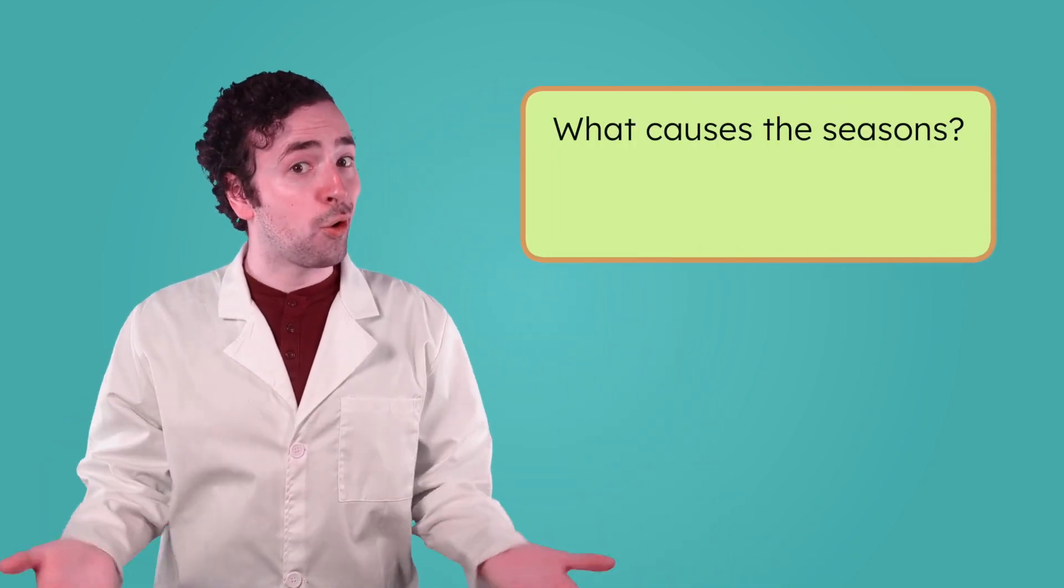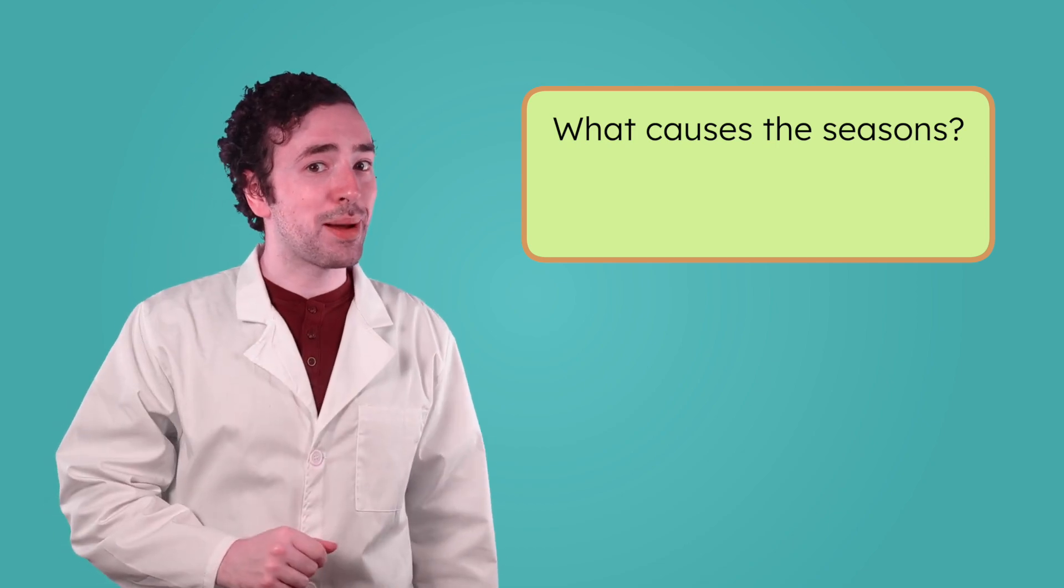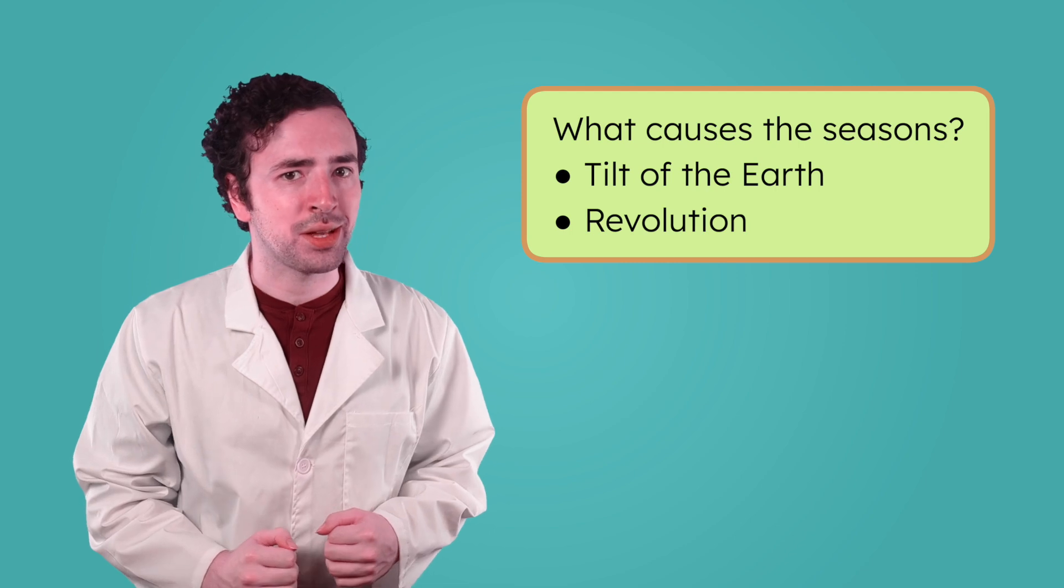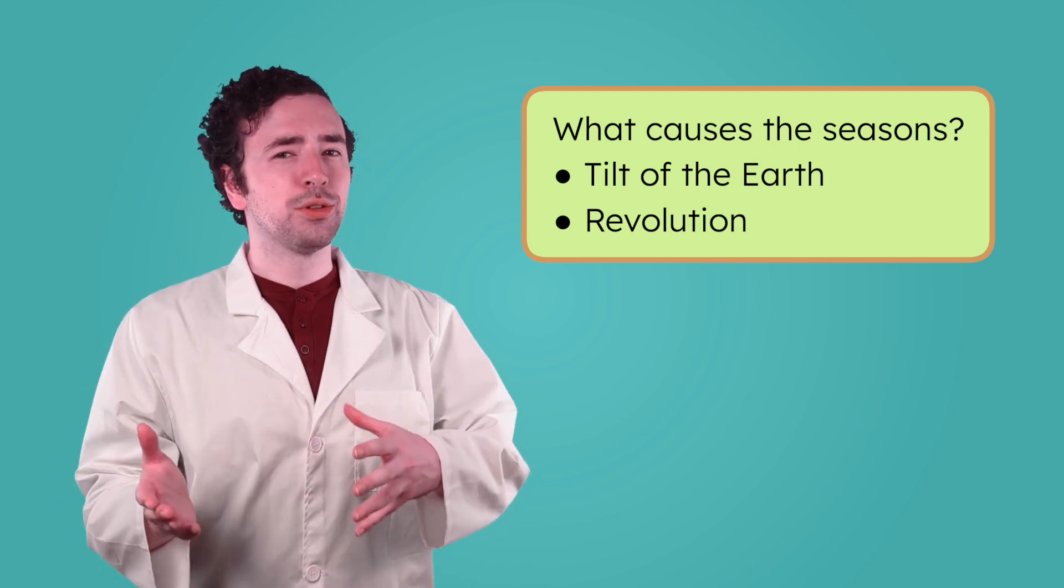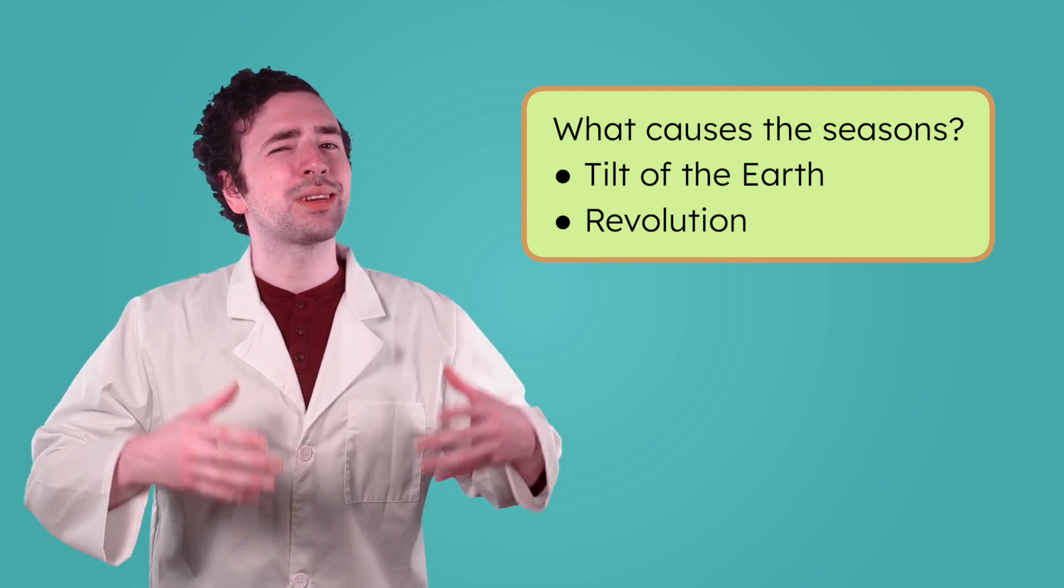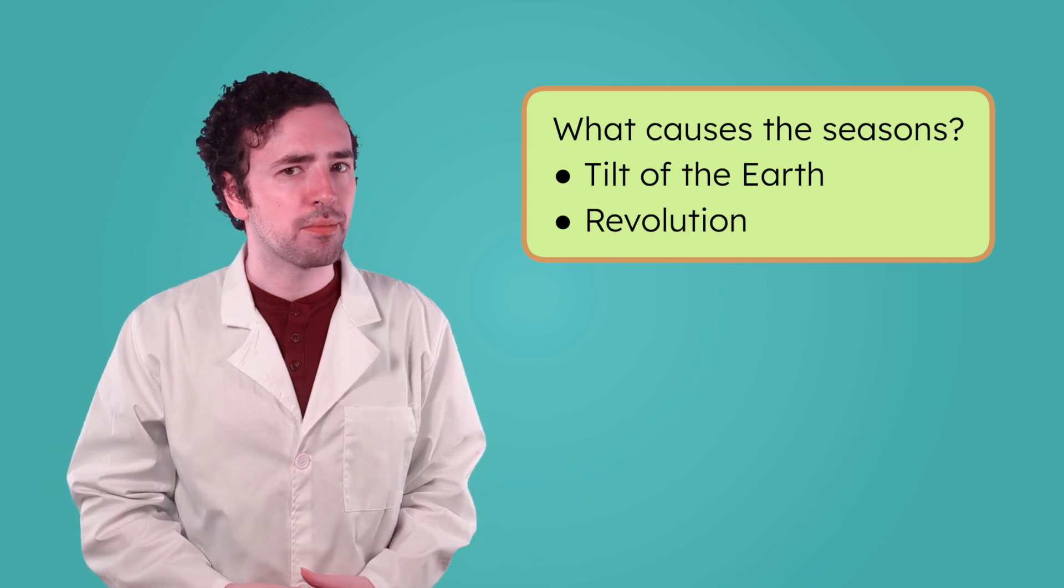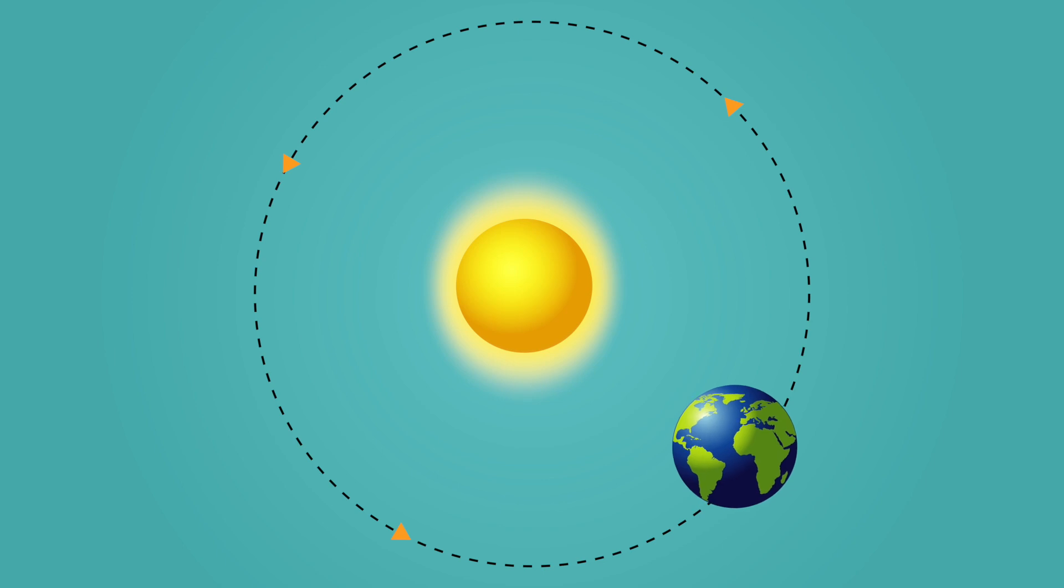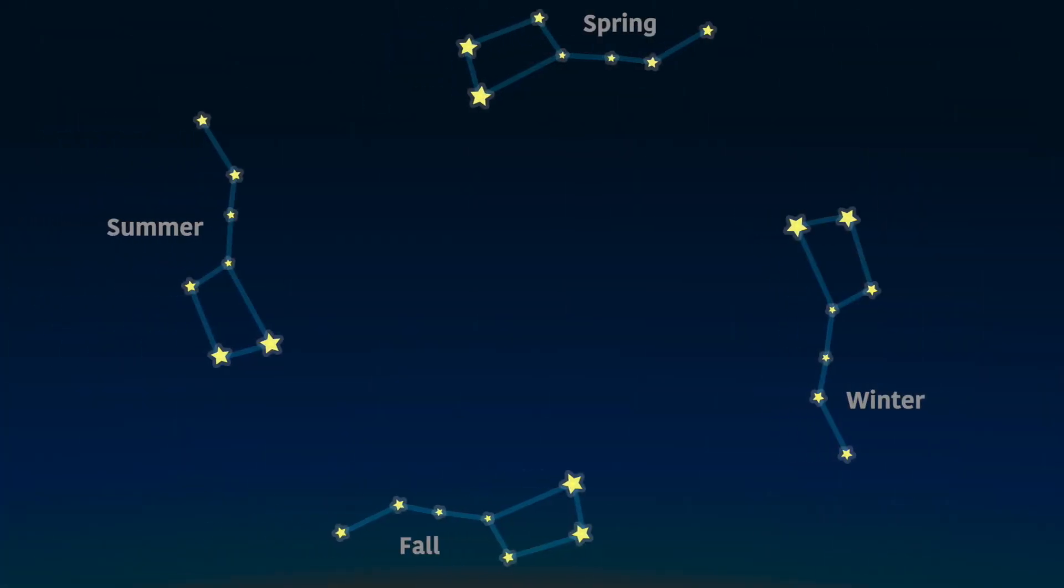People also noticed that some constellations only show up during certain seasons. Why do you think that happens? Well, what causes the seasons? You might remember, it's the tilt of the Earth and the Earth's revolution around the Sun. Which of those, tilt or revolution, would make the stars and constellations look different at different times of year? It's the revolution. As Earth travels around the Sun, our view of the night sky changes. This means that constellations might be found in different parts of the sky during different seasons.